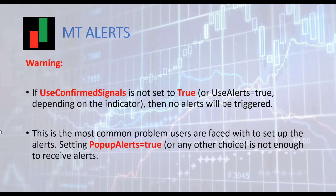Be aware that to have alerts working properly, you need both 'use confirmed signals' set to true AND the specific alert type set to true — for instance, pop-up alerts to true. Only setting pop-up alerts to true without enabling 'use confirmed signals' will not enable alerts. This is the most common issue users have when setting up alerts.